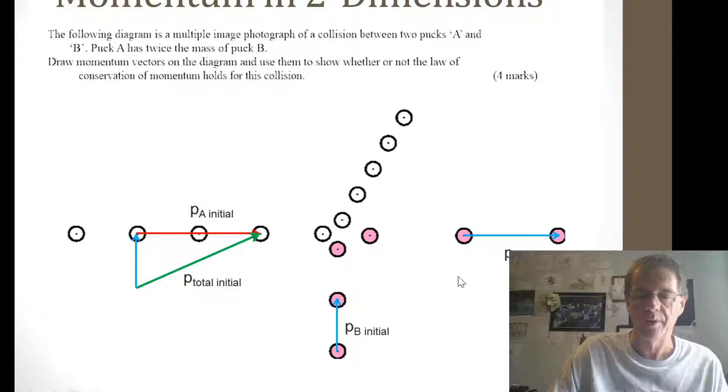And the same over with PB. Only one pair of images there and two pairs for PA because it's twice the mass. So we need to add these tip to tail here and looking at that then we get our total. So if you measure this with a ruler you're going to get the same size.